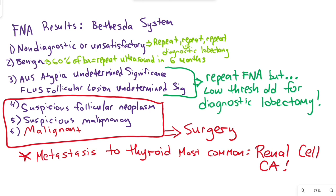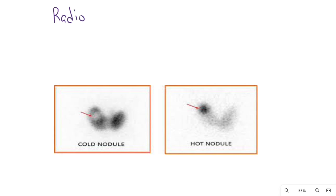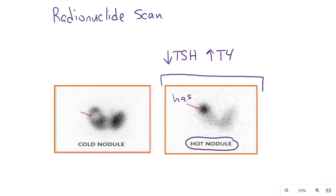If biopsy shows something that does not obviously require surgery, another investigation that may help is a radionuclide study or radioactive iodine uptake scan. If thyroid function testing shows low TSH and high T4, then this could be a hot nodule with uptake on radioactive iodine uptake scan, also called a solitary toxic nodule. Hot nodules are almost never malignant.